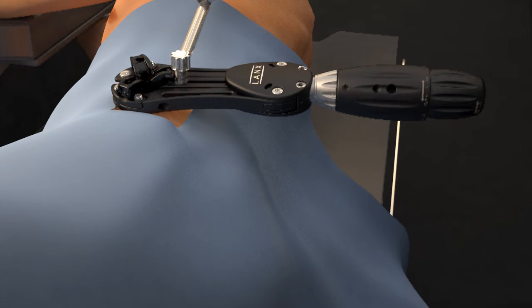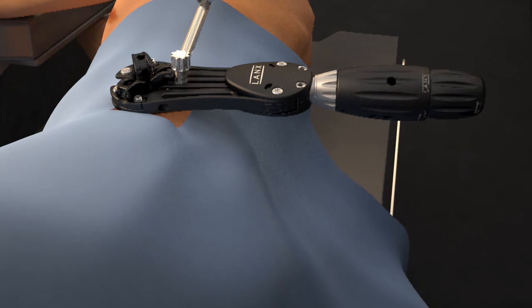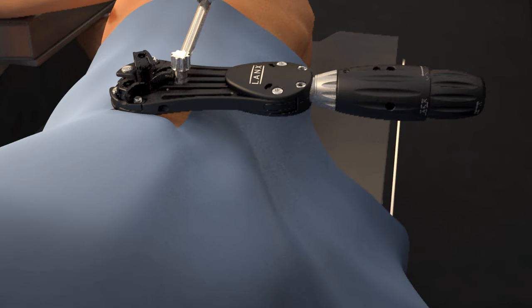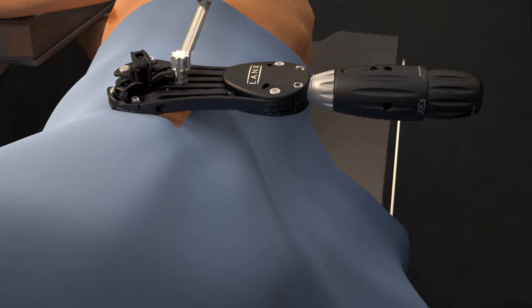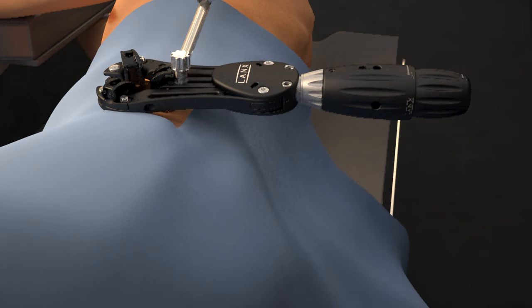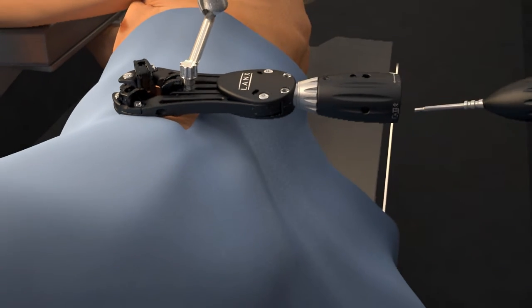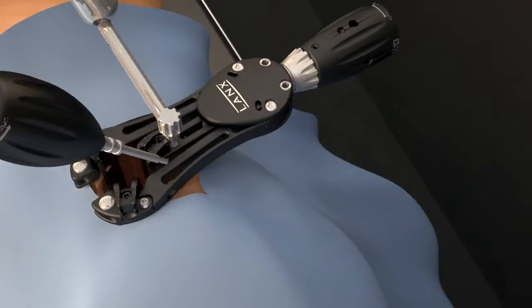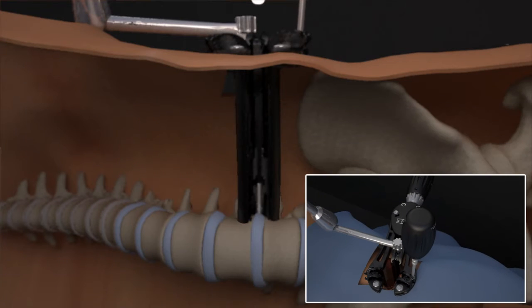Open the retractor blades by rotating the cranial caudal handle counterclockwise. Open the blades just far enough to expose the end plates of the vertebral bodies. Retract anteriorly or posteriorly as needed by rotating the posterior handle counterclockwise. Either of the cephalad caudal blades may be flared outward as needed by using the posterior handle to advance the towing screw clockwise.